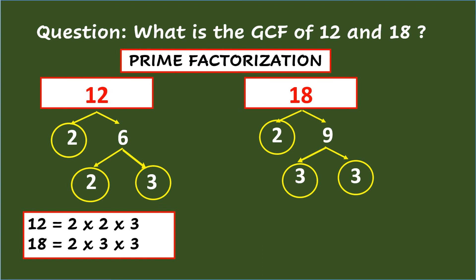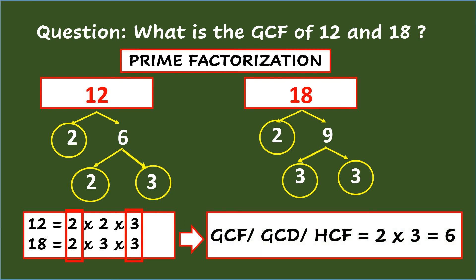Listing the prime factors of 12, you have 2 times 2 times 3. And for 18, you have 2 times 3 times 3. From here, you will select the set of prime factors common to the given numbers, and these are 2 and 3. Finally, multiply the common prime factors. So the GCF, GCD, and HCF of 12 and 18 is 6, since 2 times 3 equals 6.